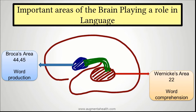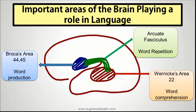Both of these areas are connected by a bunch of fibers called the Arcuate fasciculus, or Arcuate fibers. These Arcuate fibers predominantly play a role in word repetition.